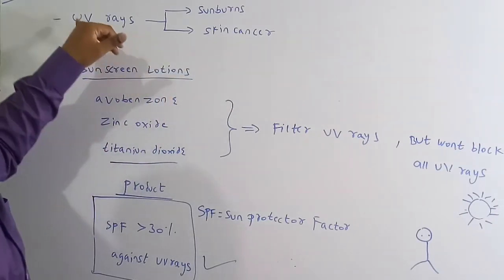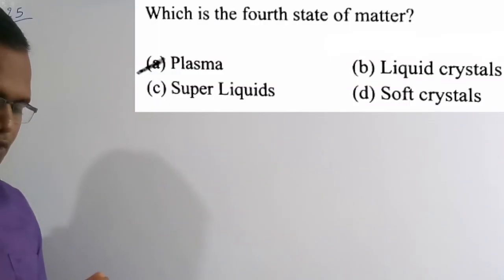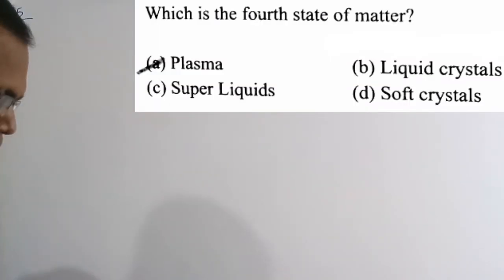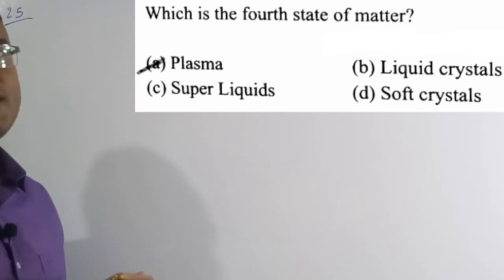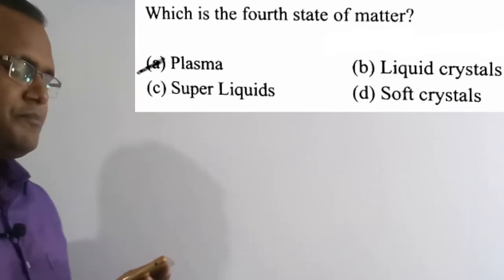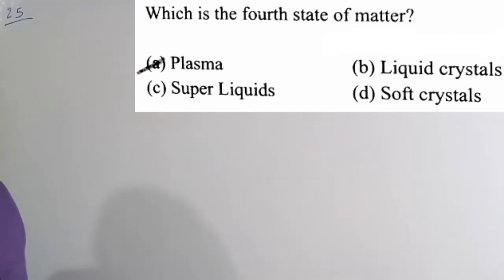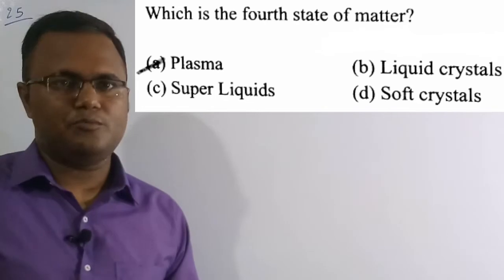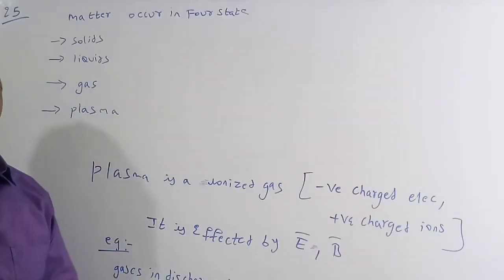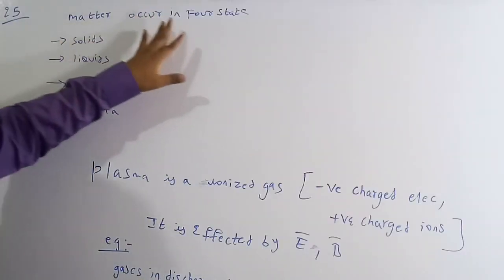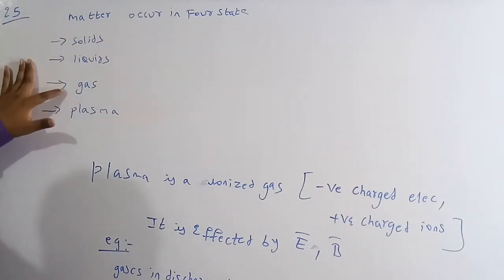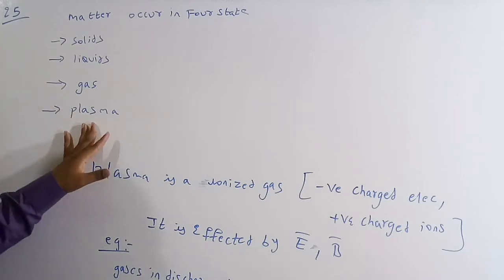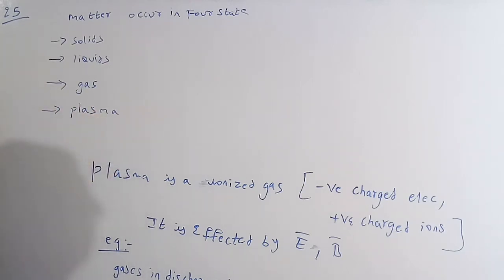Now the last question — the 25th question. Which is the fourth state of matter? Option A: plasma. Option B: liquid crystals. Option C: super liquids. Option D: soft crystals. The correct answer is option A — plasma. Plasma is called the fourth state of matter. Matter occurs in four states: solids, liquids, gas and plasma.